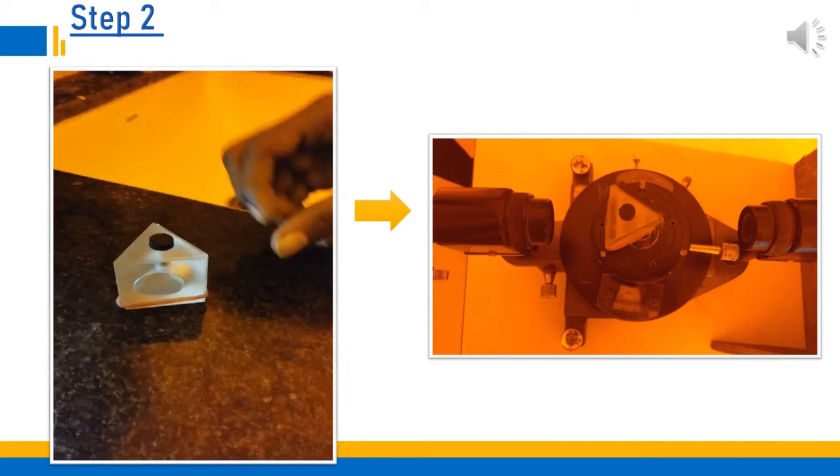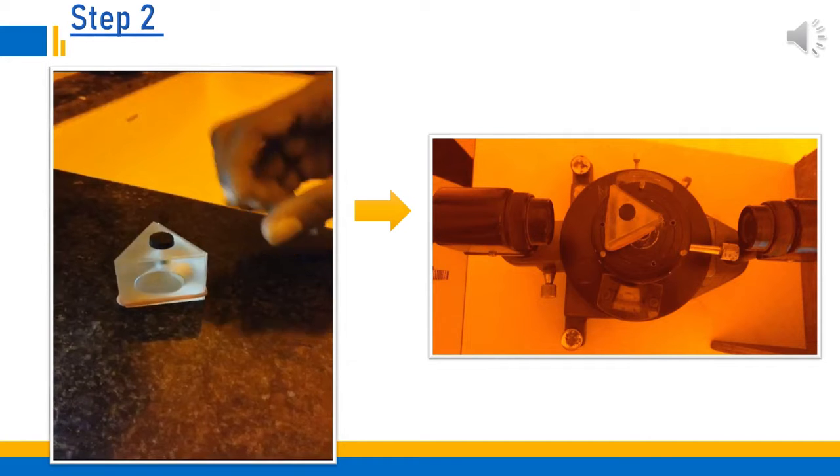Put the liquid-filled prism without air bubbles, then place it on the prism table of the spectrometer as the rough surface is facing the telescope.